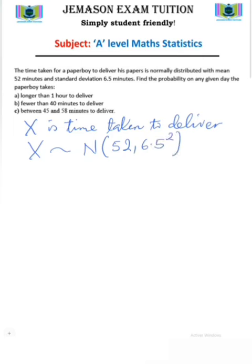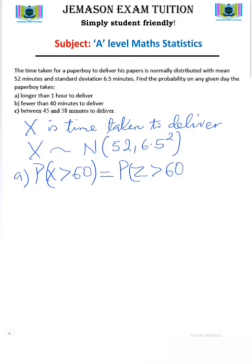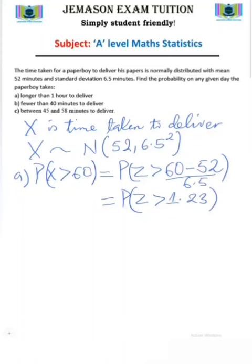In part (a), we want P(X > 60), since one hour is 60 minutes. We standardize: P(Z > (60 − 52) / 6.5) = P(Z > 8/6.5), which gives approximately P(Z > 1.23) to two decimal places. P(Z > 1.23) is the area to the right of 1.23, which we obtain as 1 − Φ(1.23).